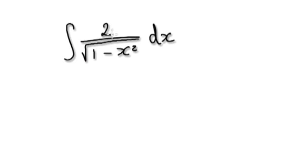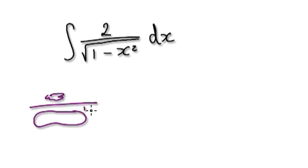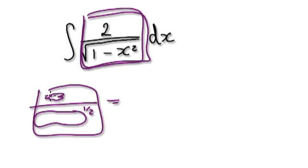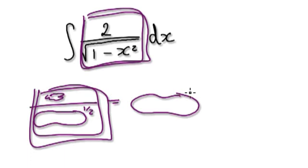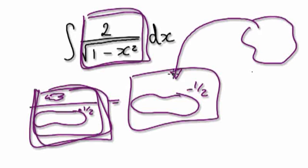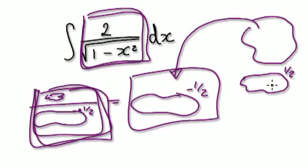You could try and visualize this as something over this thing here, or you could visualize it as something to the power of minus a half. So this thing here can be written as something to the minus a half, and you have to think of something that when you differentiate it will give you something similar. You could try something to the power of positive a half.